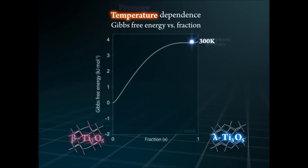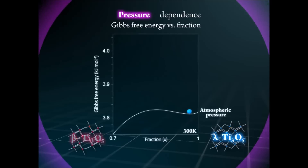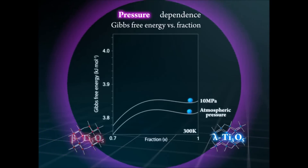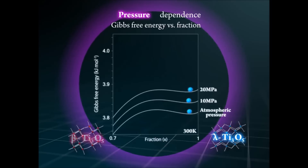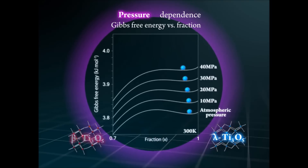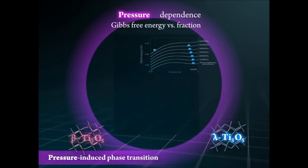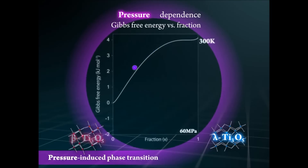Here, we focus on the Gibbs free energy curve at 300 Kelvin and examine the effect of external pressure. By the application of pressure, the Gibbs free energy curve gradually changes, and at 60 MPa, the energy barrier disappears, causing the phase transition from lambda to beta phase, shown with the red ball.